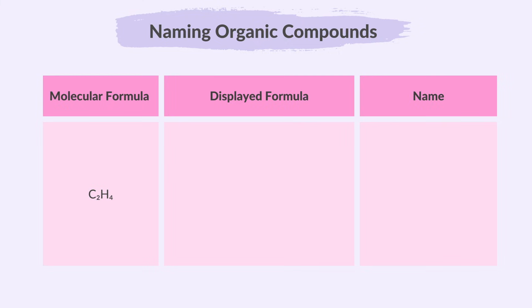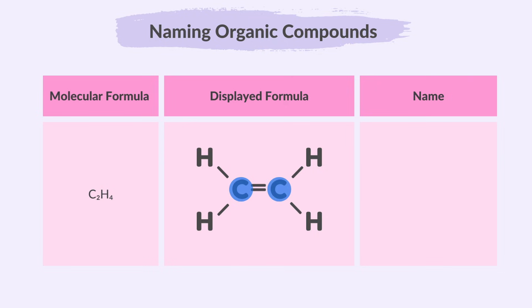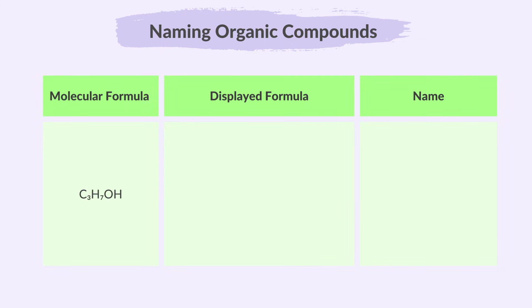Next, we have the molecular formula C2H4 and here is its displayed formula. We can see that it has two carbon atoms, which indicates a prefix of eth in its name. Since it has a carbon-carbon double bond, we know it belongs to the alkene family, so its name will end with ene. Therefore, the name of this compound is ethene.